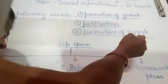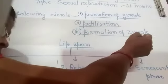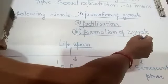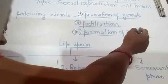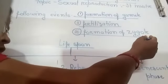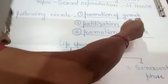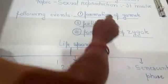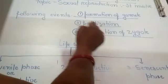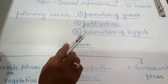Next we see the formation of zygote. Zygotes are always diploid. It is formed by the fusion of both gametes - male gamete and female gamete. These events occur only in sexual reproduction.